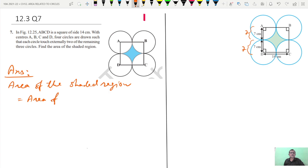area of the square minus area of 4 quadrants.